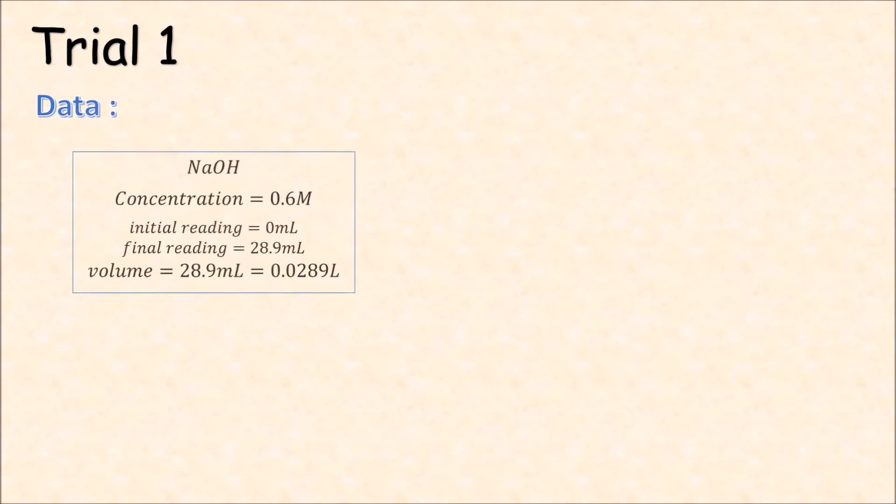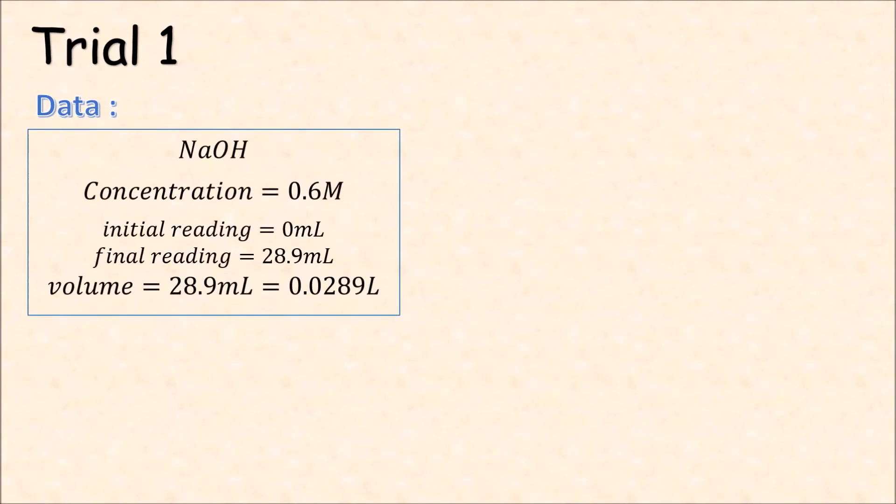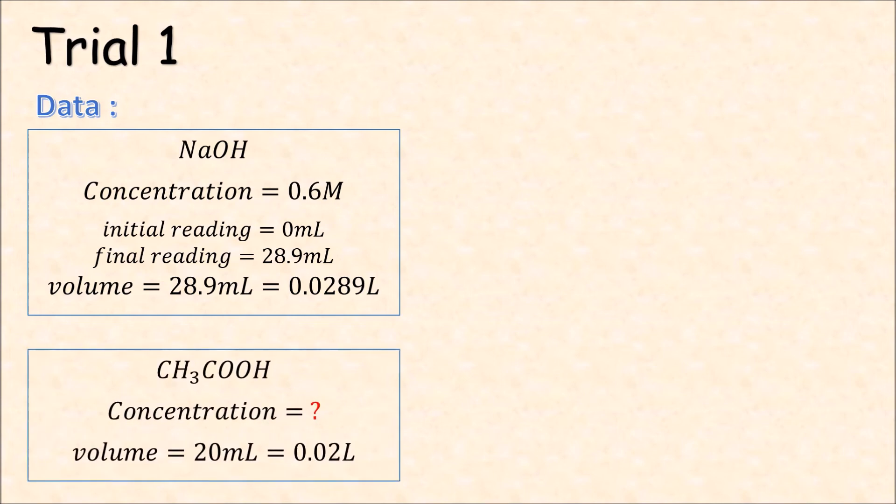Let's see the data from our experiment. For trial 1, NaOH has a concentration of 0.6 molar, with initial reading 0 and final reading 28.9 ml. The volume is 28.9 ml. The concentration of acetic acid, we don't know, and the volume is 20 ml.